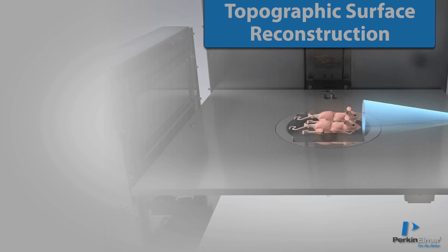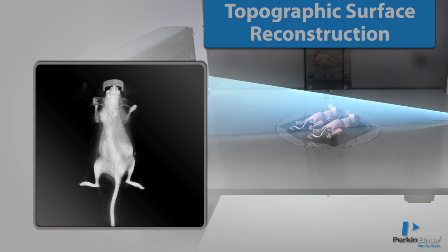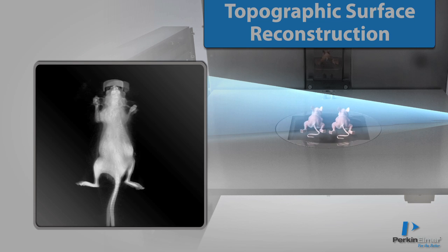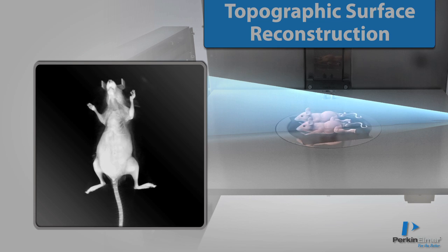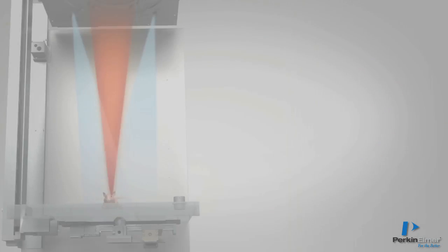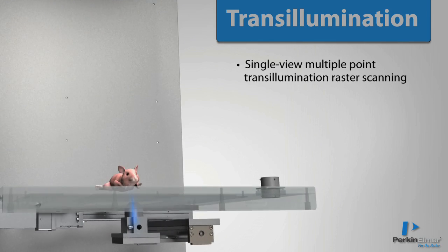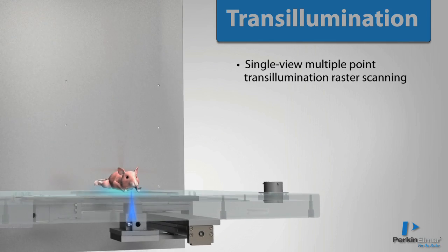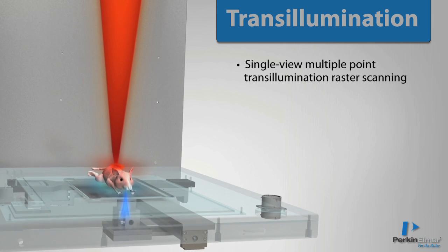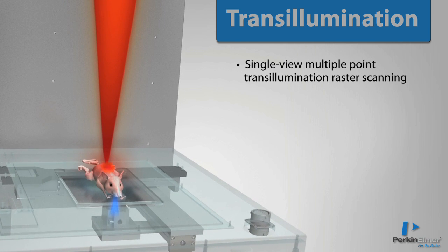The Spectrum CT uses a low-dose CT scan to quickly obtain the surface shell reconstruction of the animal. All of Perkin Elmer's systems use single-view multiple-point transillumination raster scanning to collect data that are used to reconstruct the fluorescent source.